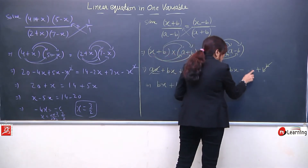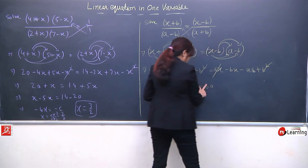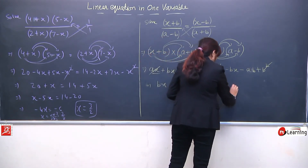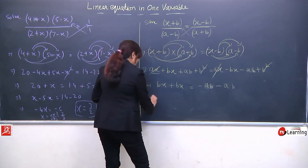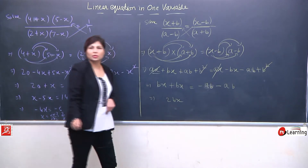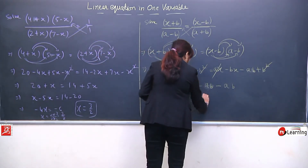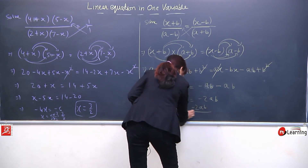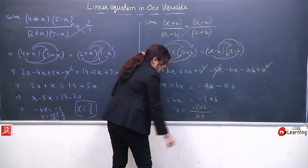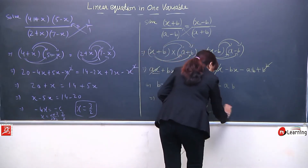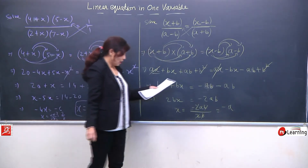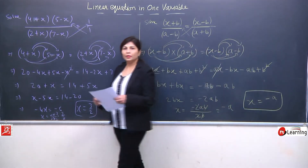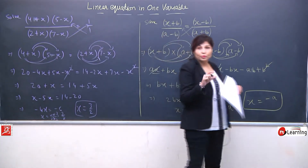Minus — isko bhi hum alphabetically likhte hain: ab. Yeh as it is hai, and this plus ab will be converted into minus ab. Ab hamare paas bx and bx — that is twice bx. Similarly it is minus twice ab. Ab hum x find karenge: x equal to minus twice ab upon twice b. 2 se 2 cancel, b se b cancel — aapke paas kewal bachega minus a. So your answer is x equal to minus a.